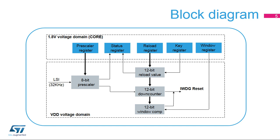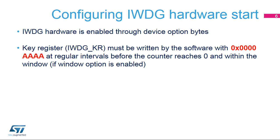If the window option is enabled, the counter must be refreshed inside the window; otherwise, a system reset is generated. The IWDG hardware is enabled by the device's option bytes. If enabled, the watchdog automatically starts at power on. To prevent any reset, the key register must be refreshed at regular intervals before the counter reaches zero and within the window, if this option has been selected.